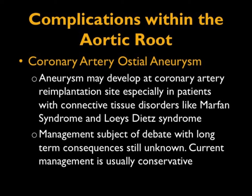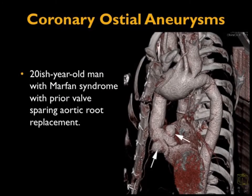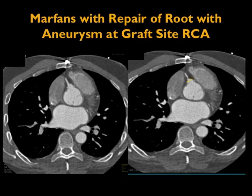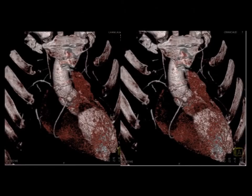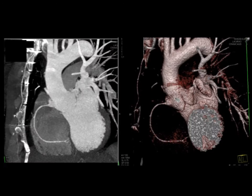Aneurysms may also develop at the coronary artery re-implantation sites, especially in patients with connective tissue disorders like Marfan's or Loeys-Dietz. Management of these is challenging — some favor aggressive intervention, others are uncertain about what happens to small coronary artery osteo-aneurysms. Here's a nice example of a patient with Marfan's and multiple prior surgeries, showing aneurysmal dilatation of both the left and right coronary arteries. Whether these require treatment is still debated — people are moving toward a more conservative approach.